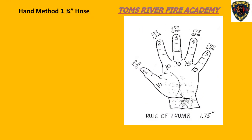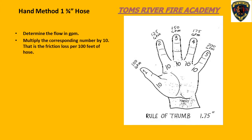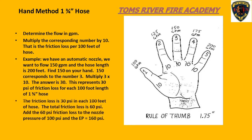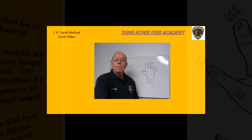Here is the hand method rule of thumb we can use to determine friction loss. The first thing we always need to know is the required flow in gallons per minute. Each finger has a designated flow in GPM, and each flow also has a designated number. To find the friction loss, select the flow, take the assigned number, and multiply it by 10. That gives you the friction loss for each 100-foot section of hose. The next slide has a short video to walk you through the hand method for inch and three-quarter hose.